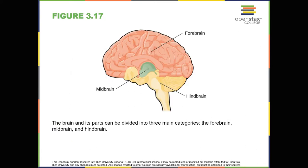Forebrain structures. The two hemispheres of the cerebral cortex are part of the forebrain, shown in figure 3.17, which is the largest part of the brain. The forebrain contains the cerebral cortex and a number of other structures that lie beneath the cortex called subcortical structures. These include the thalamus, hypothalamus, pituitary gland, and the limbic system, which is a collection of structures.